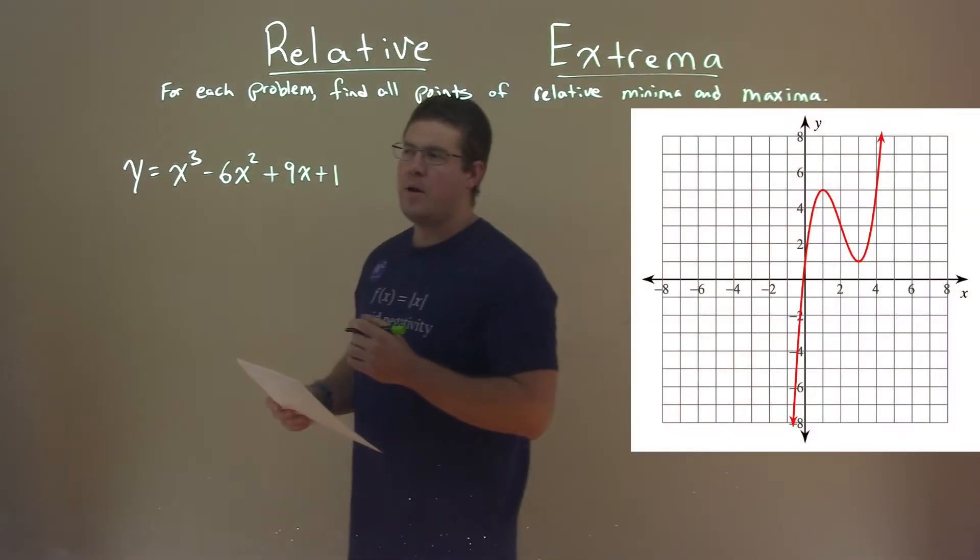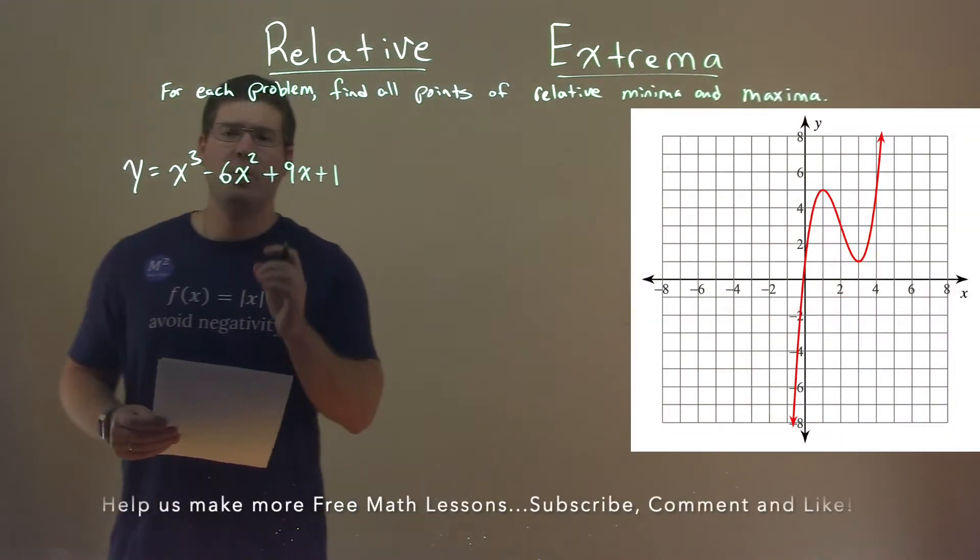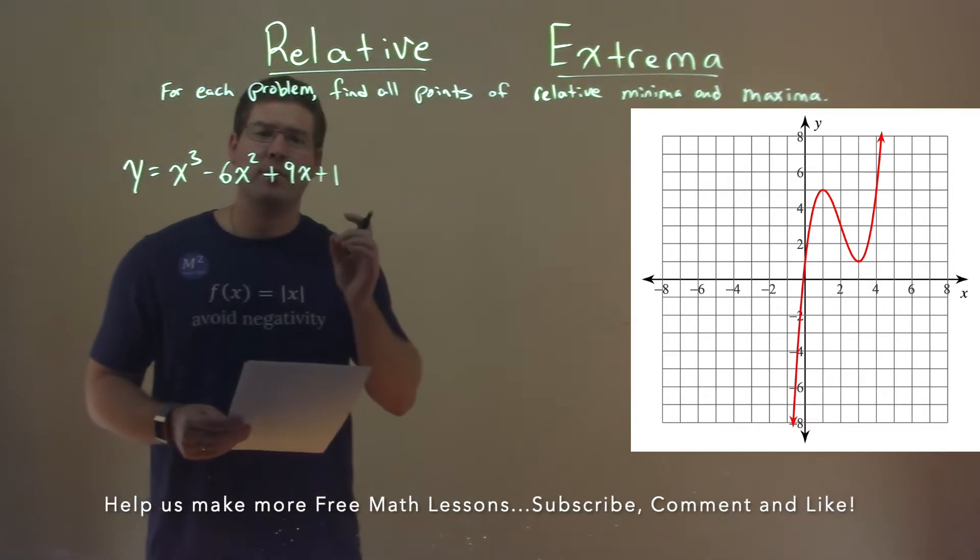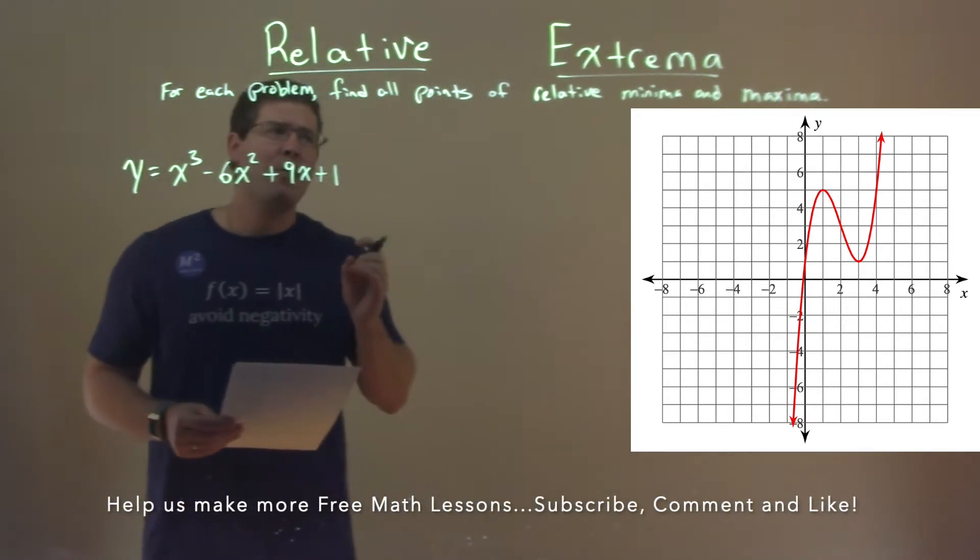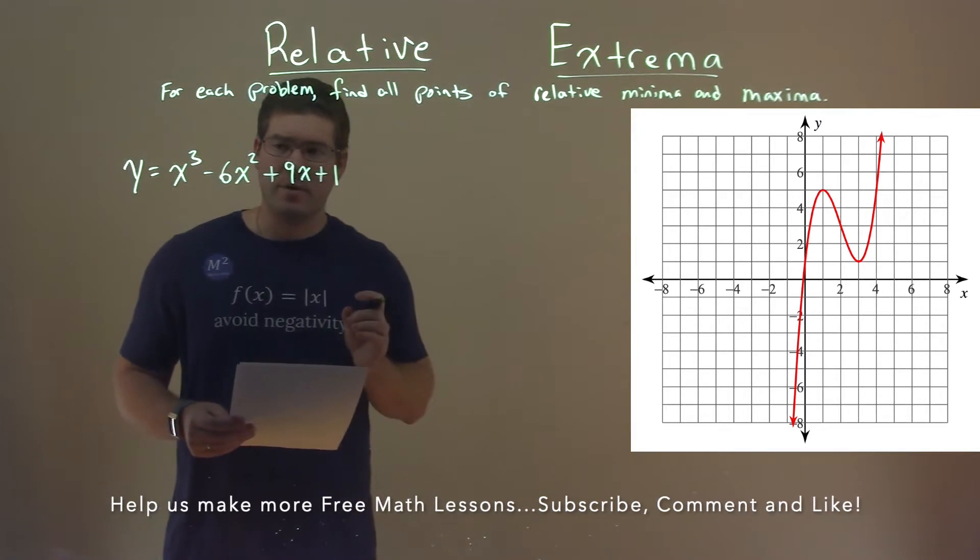We're given this problem right here: y equals x to the third power minus 6x squared plus 9x plus 1, and we want to find the points of relative minimum and maximum here.